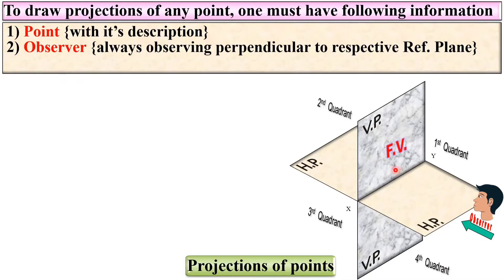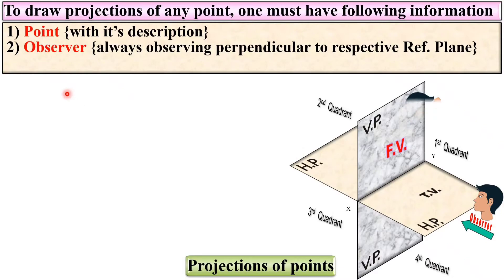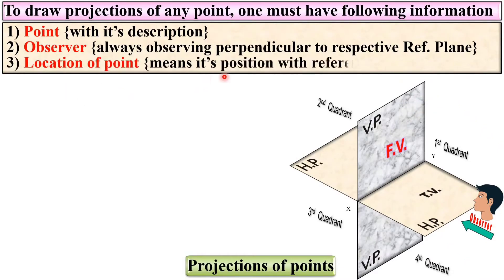If you see in this direction then your view is projected on the VP and that is called the front view. If you see from the top side then your projection must be on the horizontal plane and that view is known as the top view. Next, location of the point means its position with reference to horizontal plane and vertical plane.